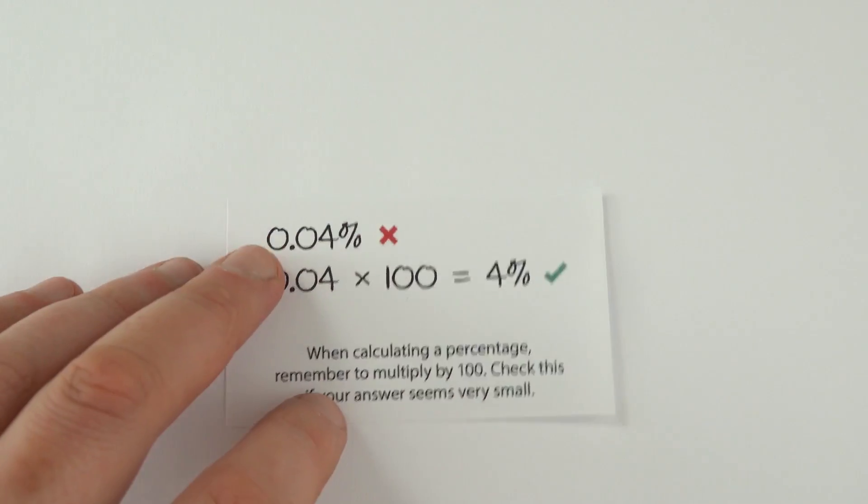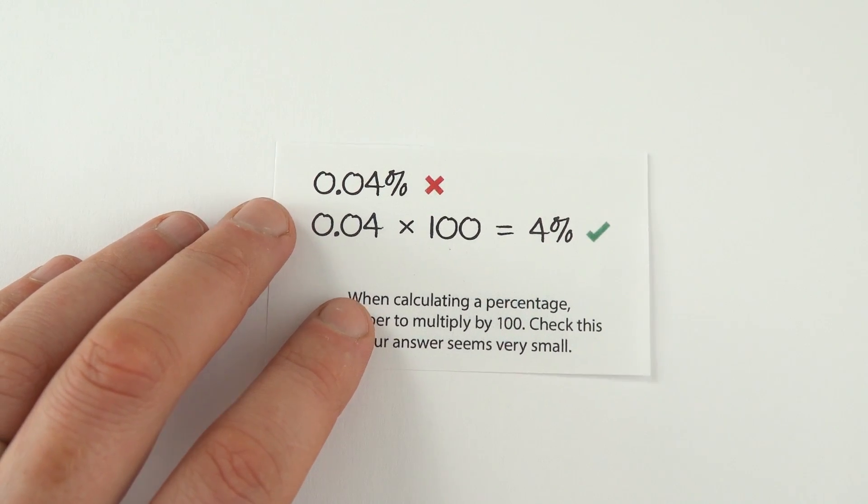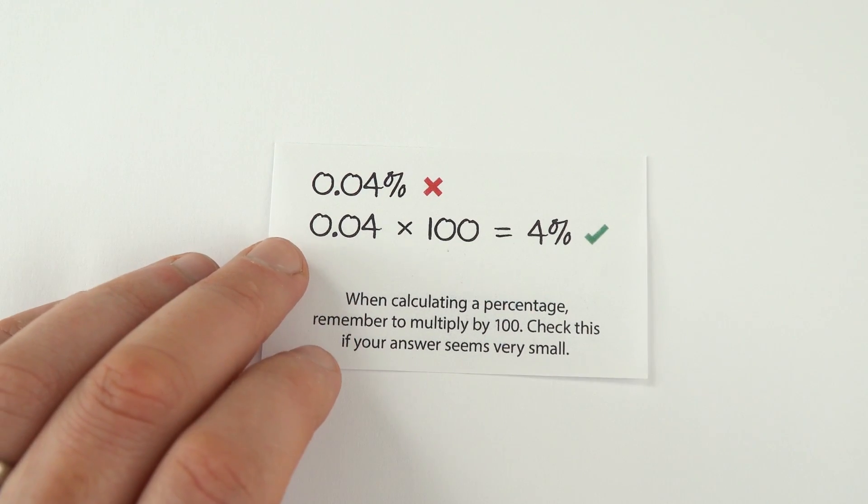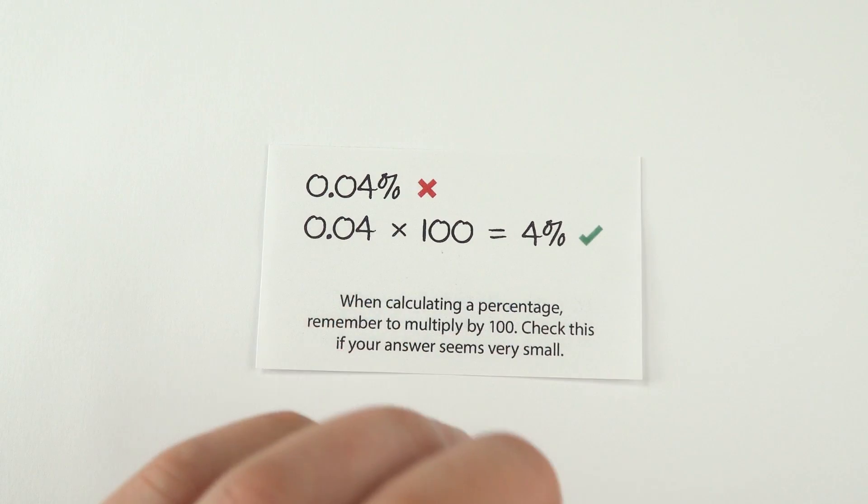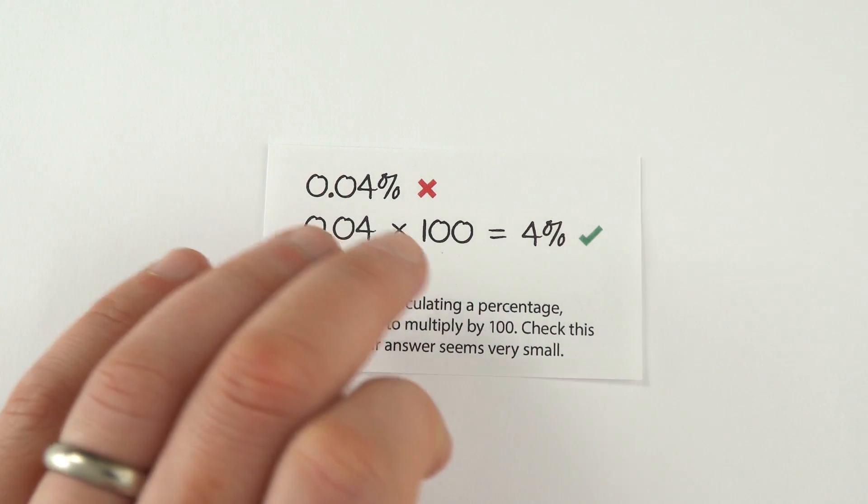People must be making this mistake quite a lot about calculating percentages, maybe it's about efficiency. Just confirm you've actually multiplied your final answer by 100. Otherwise, the answer you get, it's not a percentage, it's then just a value between 0 and 1.